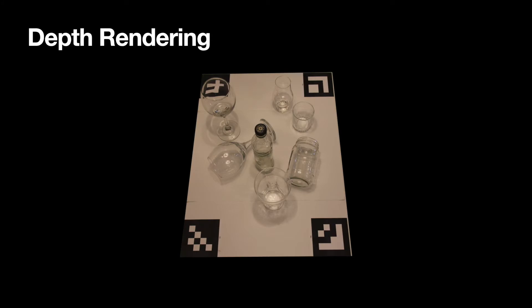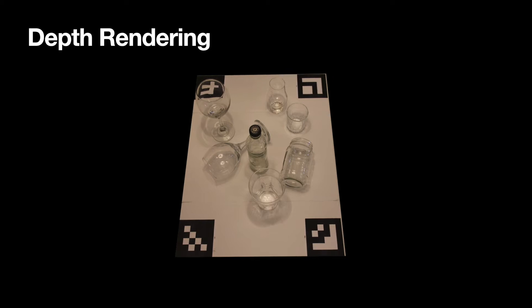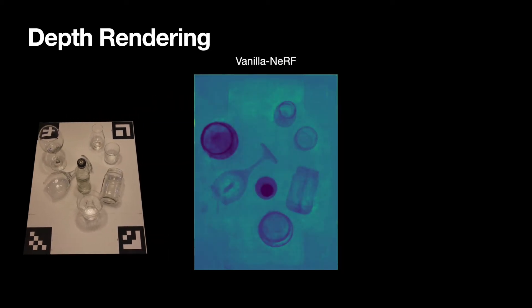Vanilla NeRF renders depth by converting sigma to an occupancy probability alpha and computing a weighted average over sample distances along a ray. When applied on transparent objects, however, this results in noisy depth maps with missing depth values.